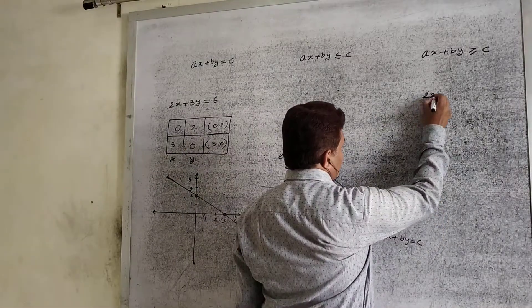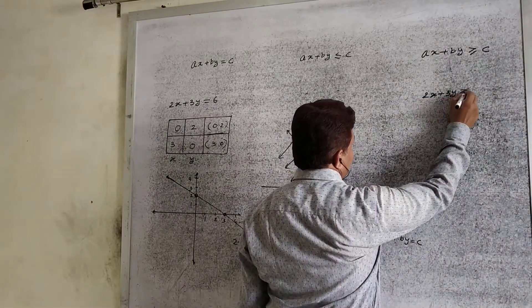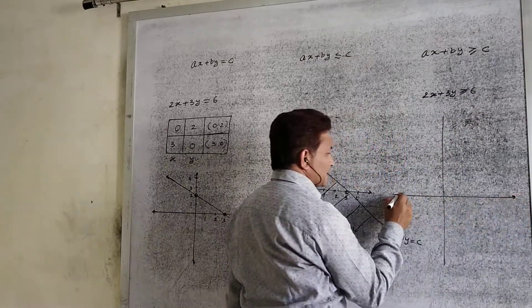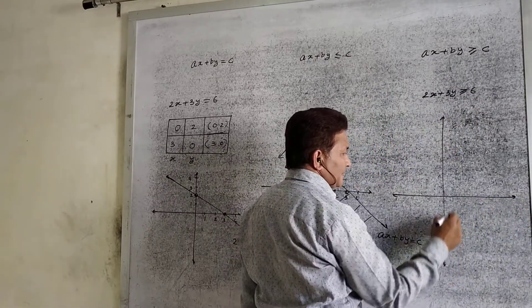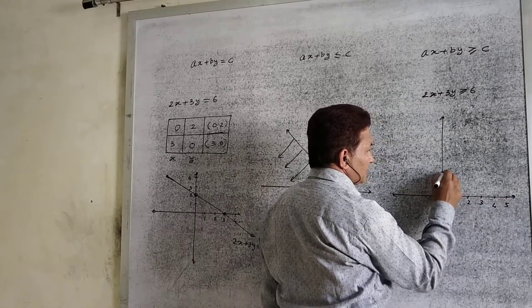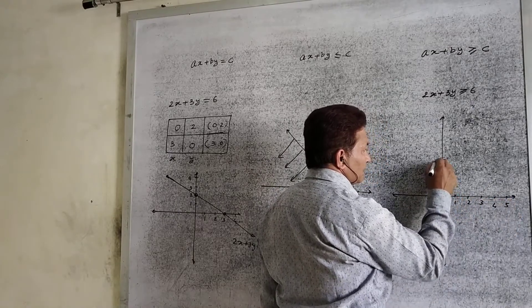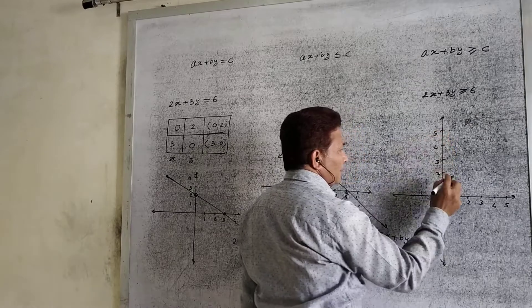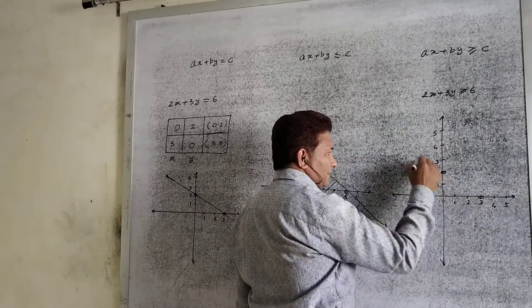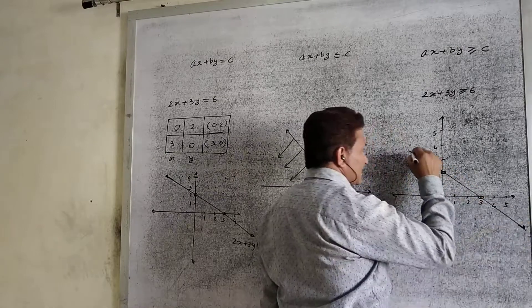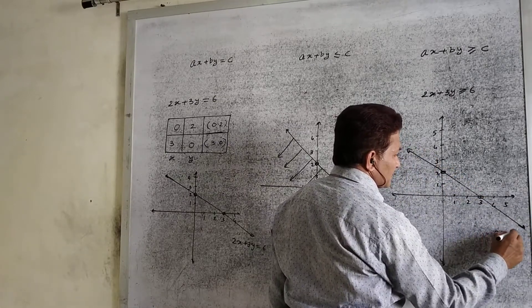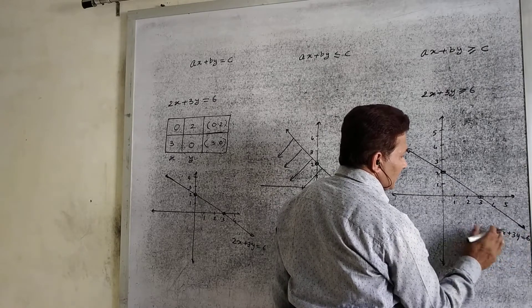Now consider the same example with the greater than or equal to case: 2x plus 3y greater than or equal to 6. We get the same line for the equation. Drawing the same line, with points at (0, 2) and (3, 0), this is the line 2x plus 3y equal to 6.